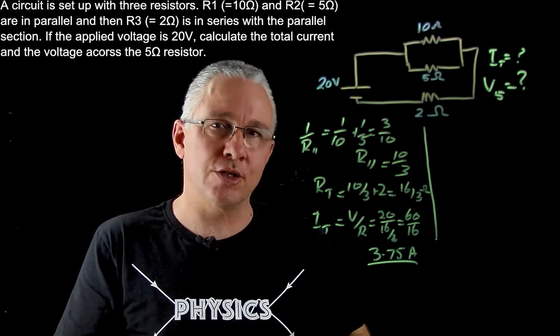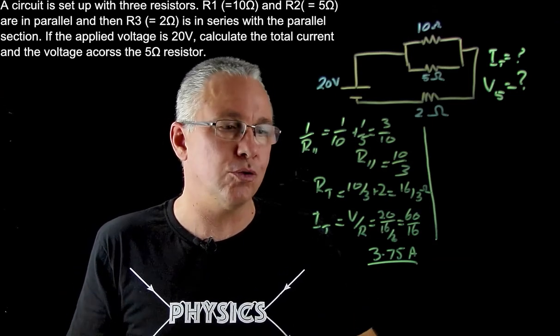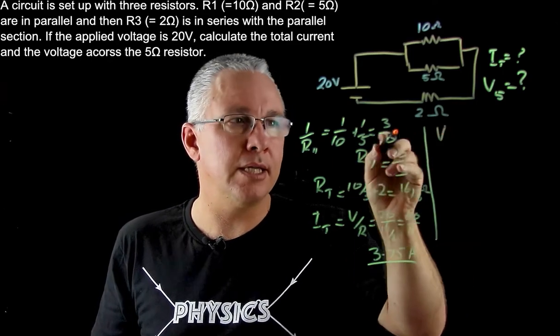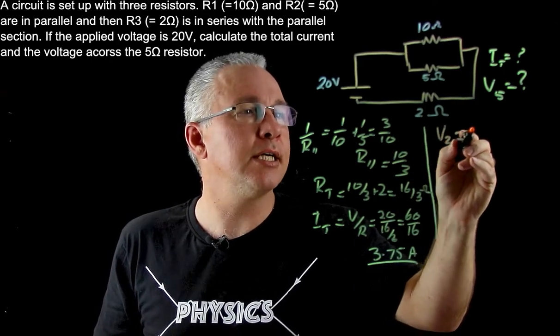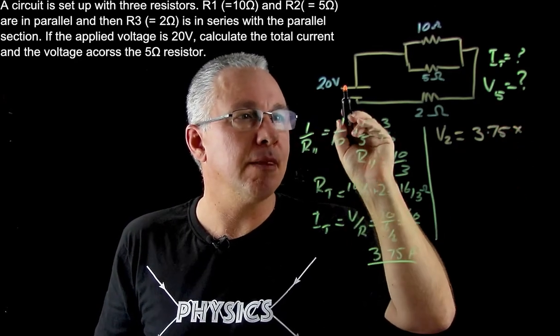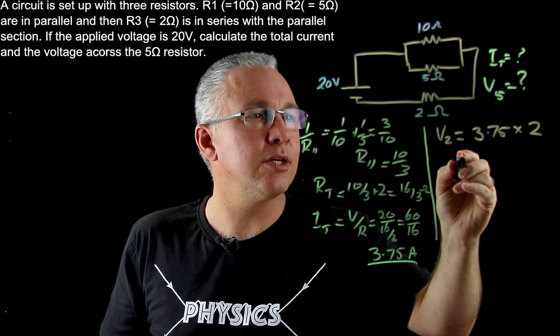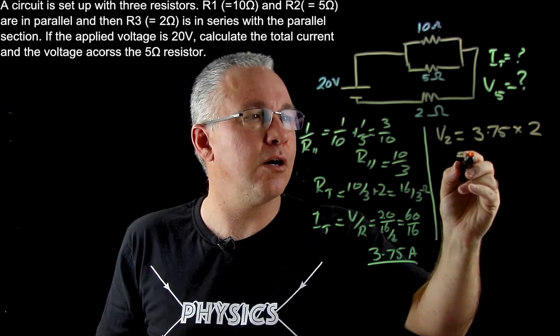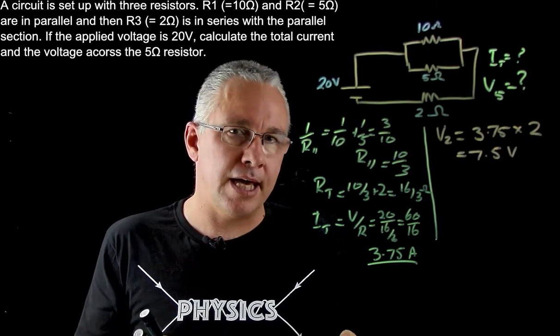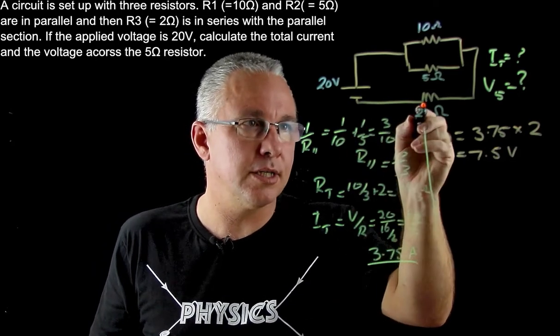How do we do that? Well, we know the total current is 3.75, so the voltage drop in my 2 ohm resistor is equal to the current, 3.75, multiplied by the resistance, which is 2. So that gives me a value of 7.5 volts. That's the voltage drop across this resistor.